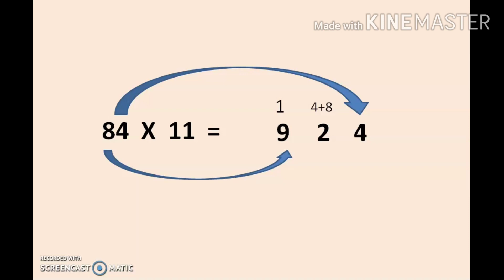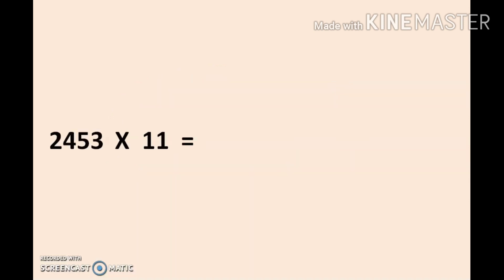Using this trick, you can do it for 3-digit or 4-digit numbers also. Let me explain another example for a 4-digit number. Here we have 2453 × 11. I've already explained how to start from right to left. On the right we have 3, we write it as it is. From the right, we start to add: first, add 3 with 5, we get 8. Next, add 5 with 4, we get 9.